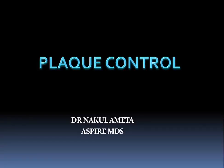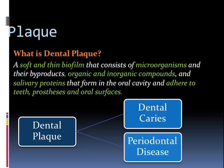Let's start with the lecture on plaque control and periodontal instruments. First we'll talk about plaque control. As we already discussed, plaque is a soft and thin biofilm that consists of various microorganisms and their byproducts, various inorganic and organic compounds, and salivary proteins, which are formed in the oral cavity and adhere to the teeth, prostheses, and other oral surfaces.